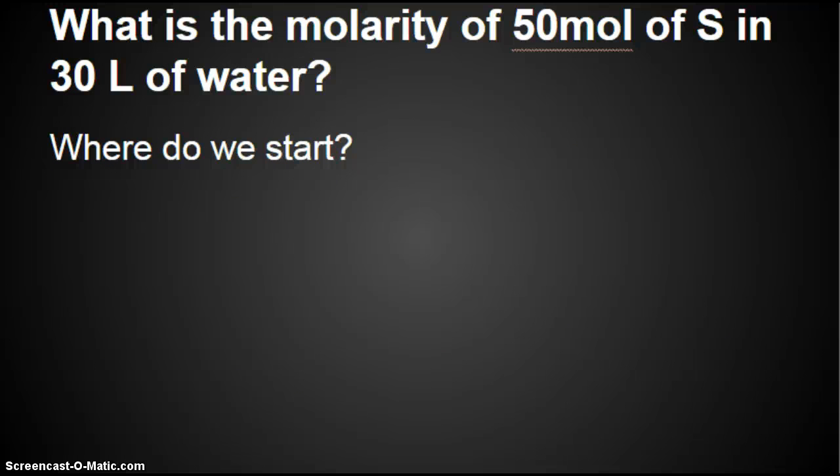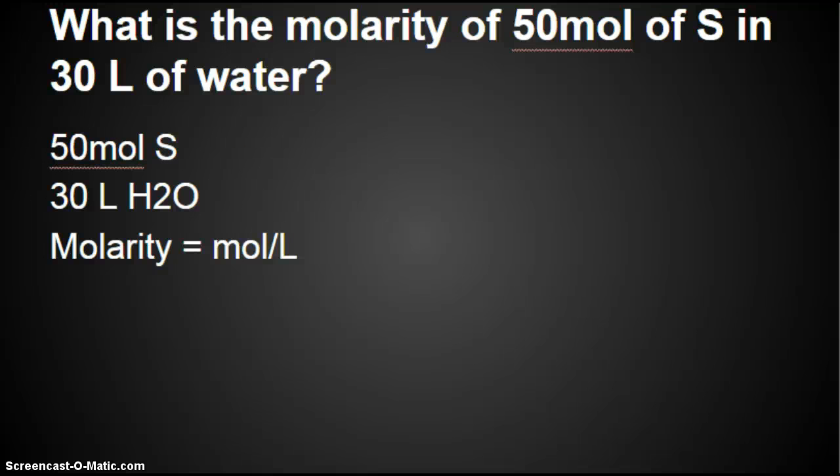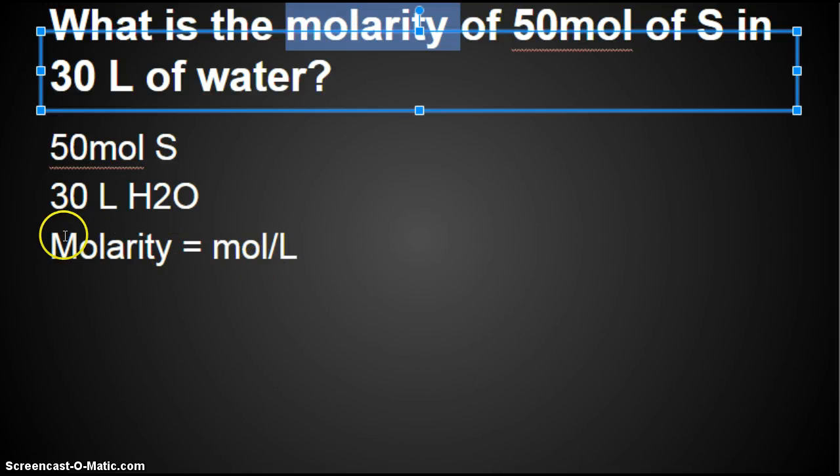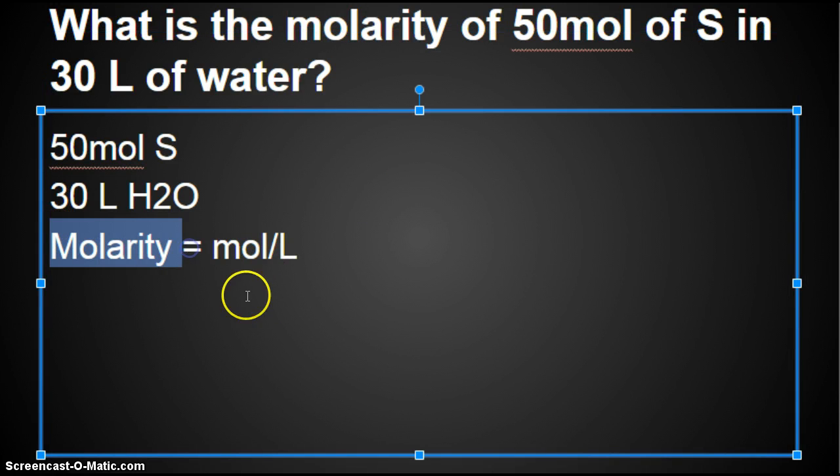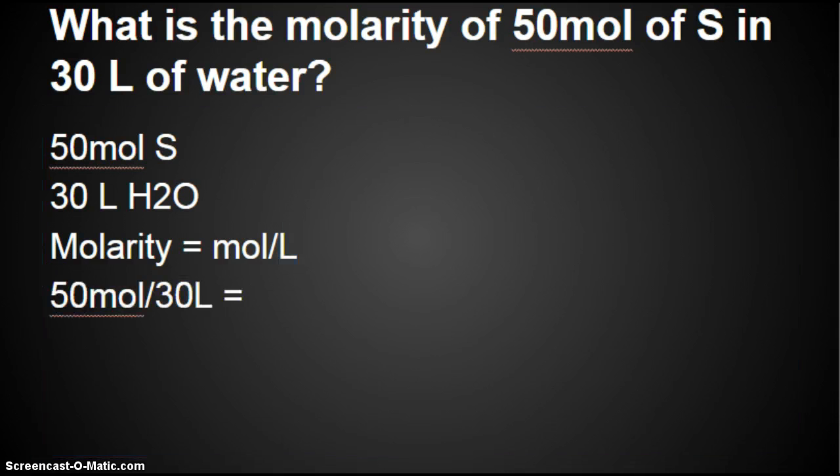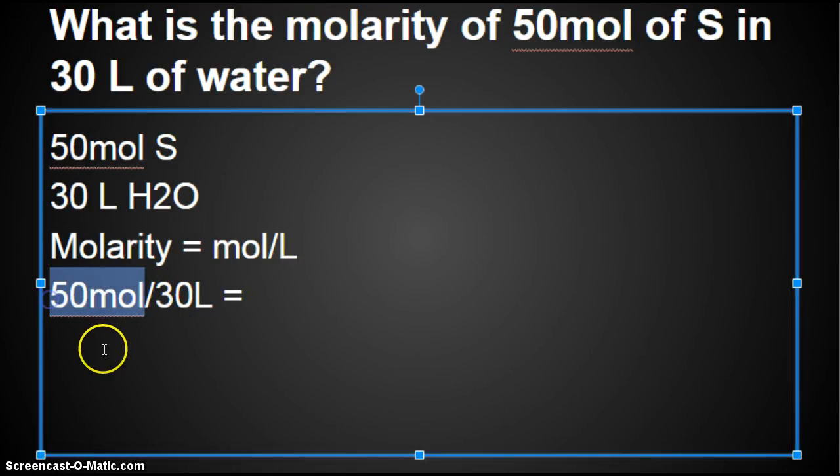What is the molarity of 50 moles of sulfur in 30 liters of water? Where do we start? I gave you 50 moles of sulfur and 30 liters of water. We're trying to find the molarity. So we need to remind ourselves what molarity is. Molarity is simply the number of moles divided by the amount of liters.